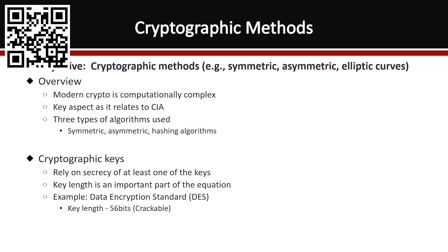What are some cryptographic methods? You have symmetric, asymmetric, and elliptic curves as the key ones being used. Modern crypto is computationally complex and relates to the CIA triangle for confidentiality, integrity, and availability. Crypto helps keep your data confidential, and from an integrity standpoint, it ensures your data hasn't been compromised. There are three types of algorithms particularly used: symmetric, asymmetric, and hashing algorithms.